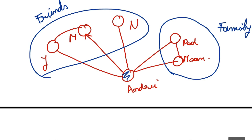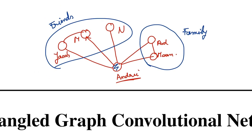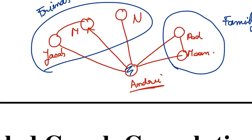The key point is that this group of people represents different characteristics of myself. Because I spend time with them, I naturally copy some of their characteristics. If all these people here are doing machine learning and I'm connecting with them, it's highly likely that I'm also doing machine learning.